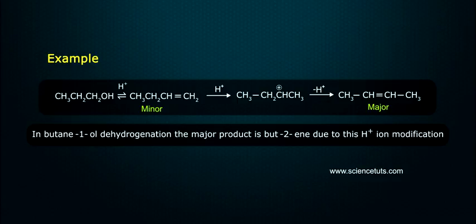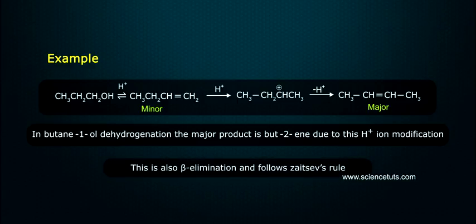Example: in butane-1-ol dehydration, the major product is but-2-ene due to this H+ ion modification. This is also beta elimination and follows Zaitsev rule.